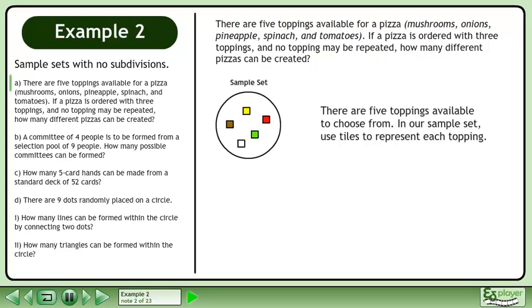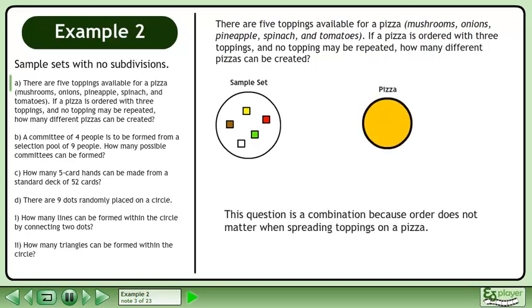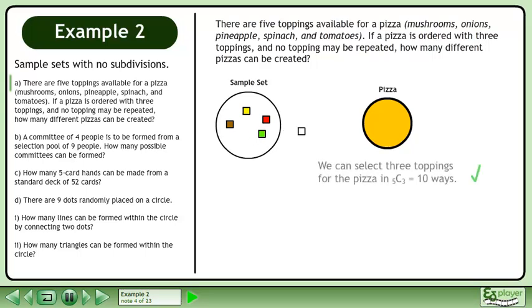There are five toppings available to choose from. In our sample set, use tiles to represent each topping. This question is a combination because order does not matter when spreading toppings on a pizza. We can select three toppings for the pizza in 5 choose 3 equals 10 ways.